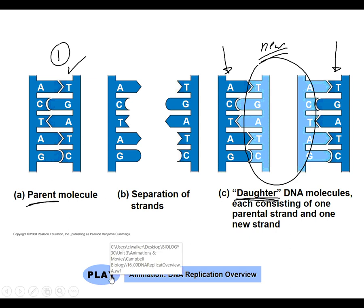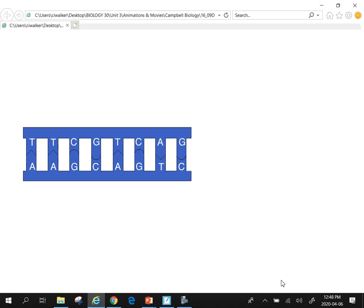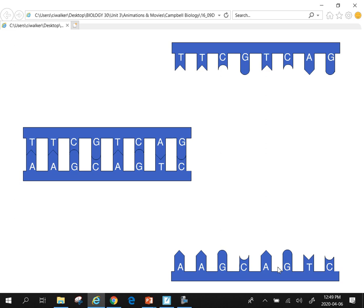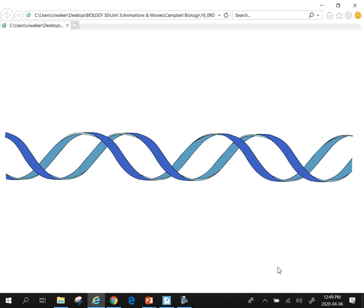Let's take a look at the first animation. It starts fairly simple. We take our double-stranded DNA and we separate it. We'll see that it's not quite this simple — it's not the entire chromosome separated at one time. But we have the complementary bases coming in, shown in the lighter shade of blue. We started with one strand and now we have two.